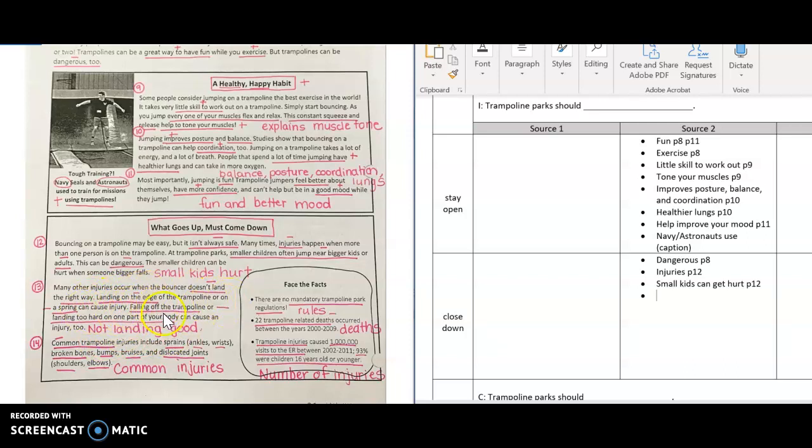You can land on the edge. You can just fall on the ground. You can hurt your body parts. So let's add to our matrix. Landing on the edge or spring of a trampoline. And that was paragraph 13. It also mentioned falling off the trampoline. Maybe you didn't even land somewhere. You just went straight to the ground.